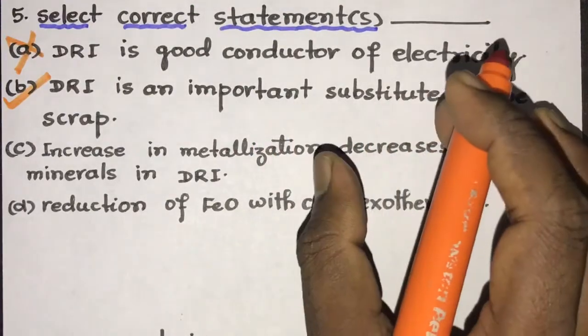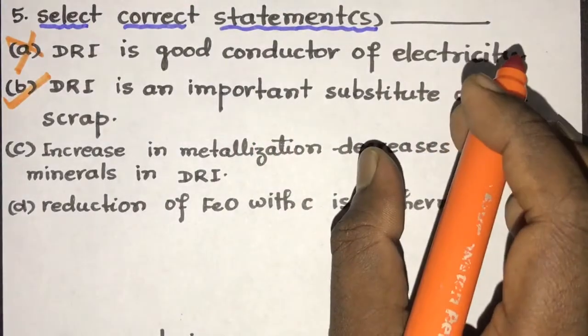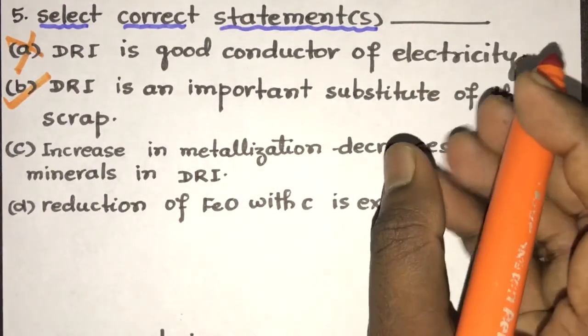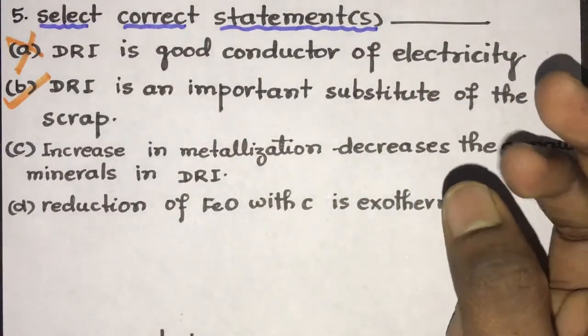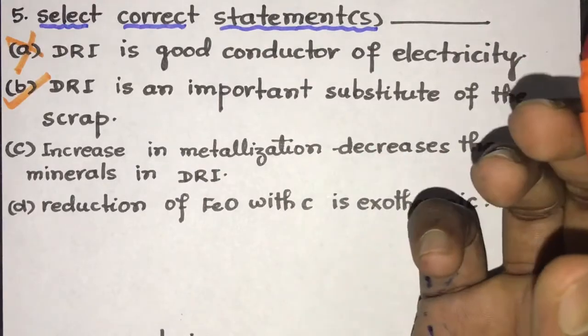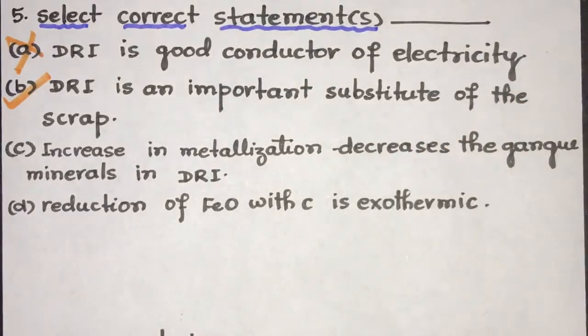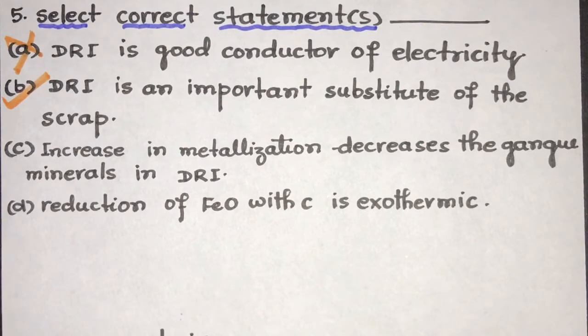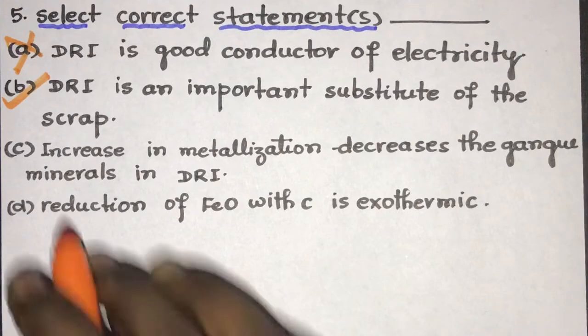So we can substitute DRI for a scrap, and it will lead to dilution of the tramp element in steel. On the other hand, if we use a scrap for the steel making, the steel scrap contains a lot of other metals like copper, nickel, chromium and molybdenum that is not good for the quality of steel. So DRI is a better substitute in steel making. In place of scrap, we can use DRI.